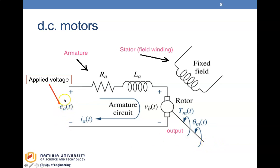The applied voltage, EA, drives the armature resistor and armature inductance. The fixed field — the stator or field winding — creates an electromagnetic field. This voltage here is the back electromotive force, Vb. We apply a voltage, the armature rotates, but because there is an electromagnetic field, the rotation also generates a voltage called the back electromotive force. When you have a coil rotating in an electromagnetic field, it generates electricity.